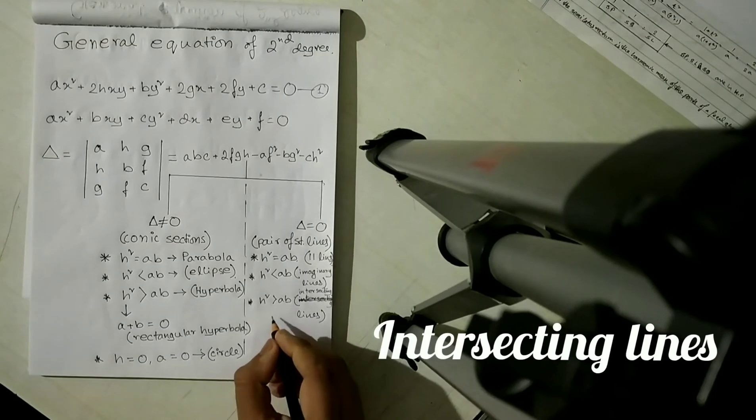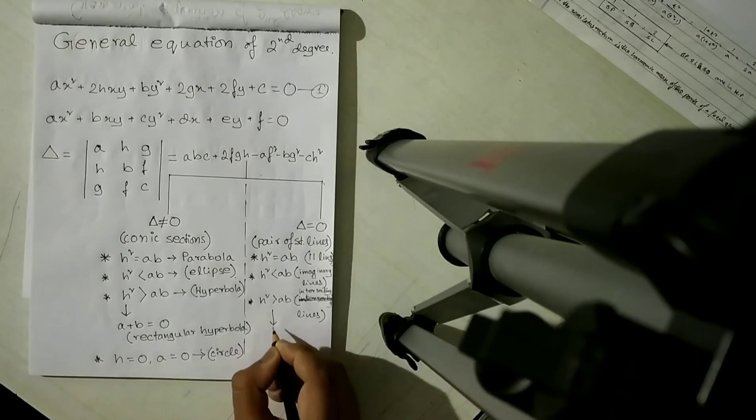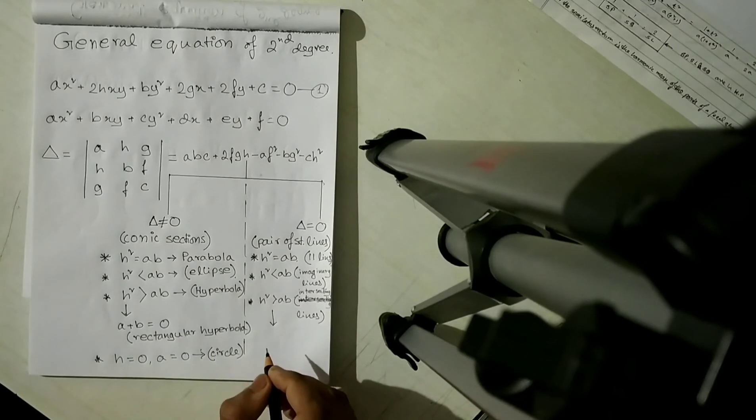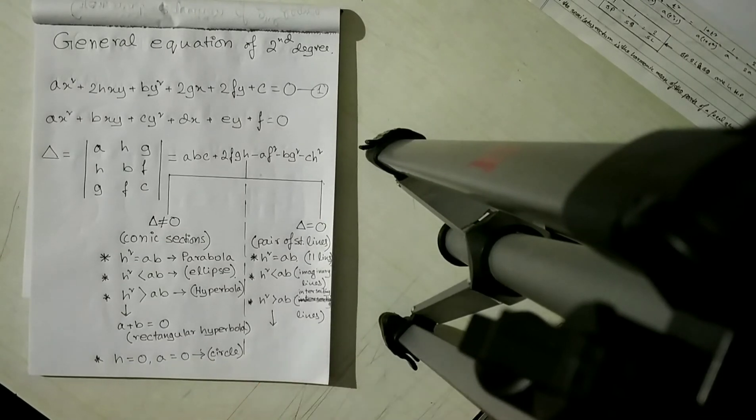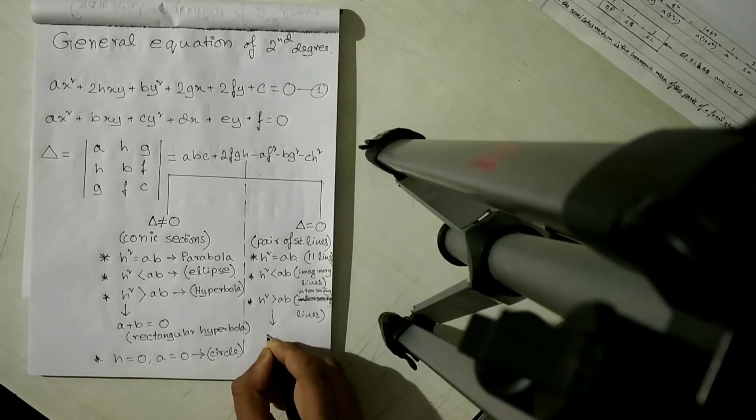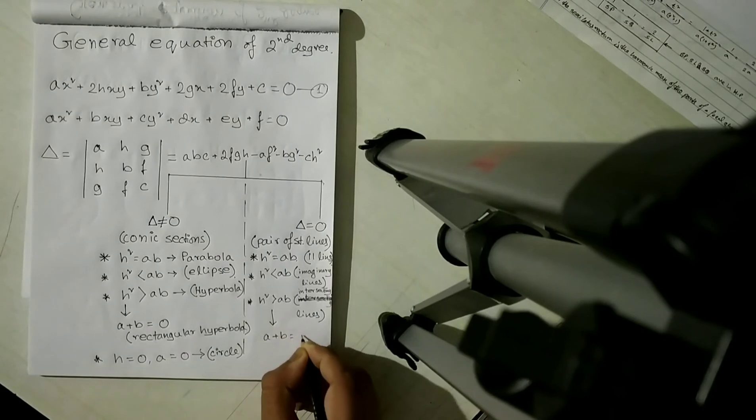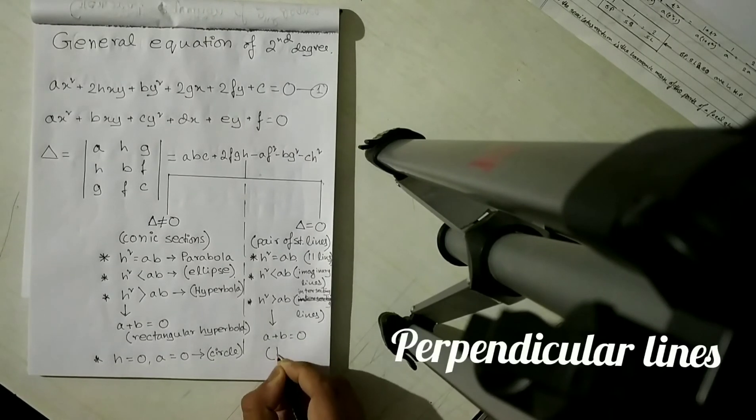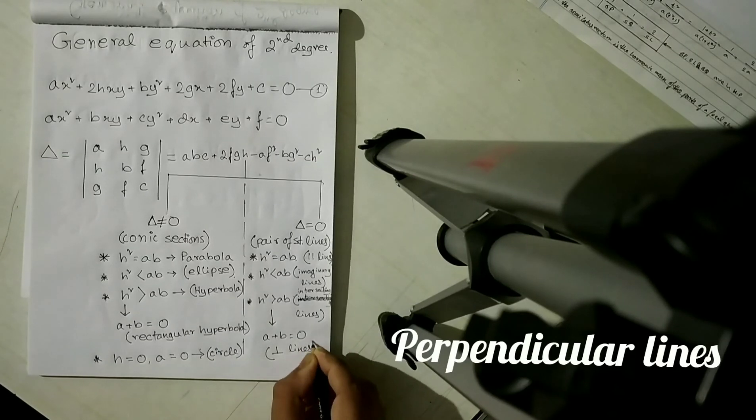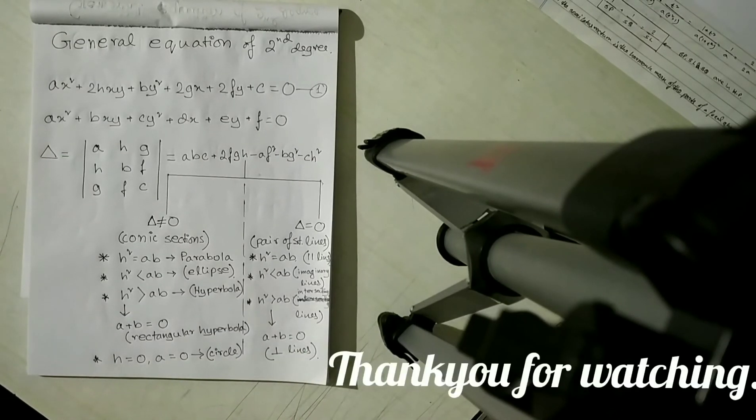And this case has a further sub-case. So if a plus b is equal to 0, the sub-case is perpendicular lines. That is, the lines are intersecting at 90 degrees.